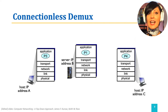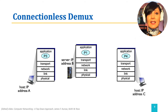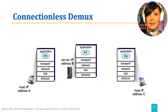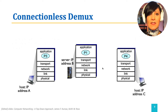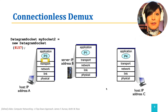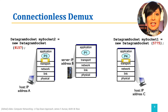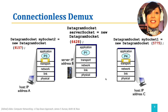Let's see connectionless demultiplexing in an example. We have three different hosts at IP addresses depicted as A, B, and C. We have created sockets: 9157 on host A, 5775 on host C, and 6428 on host B.